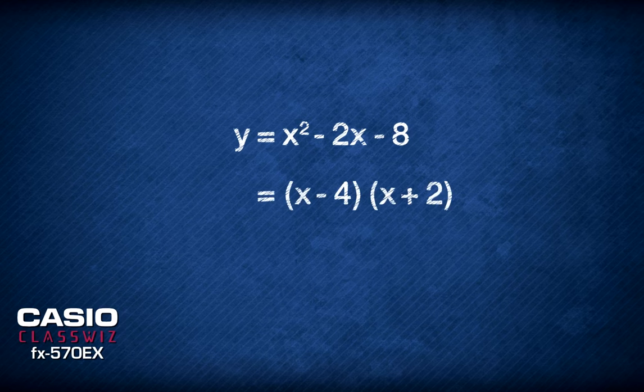From the factorized form, we are able to determine the roots of the curve to be x equals 4 and x equals negative 2.